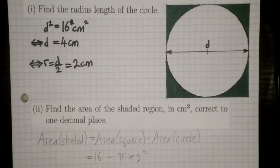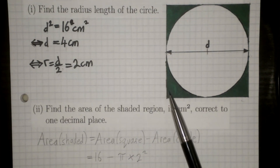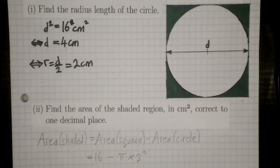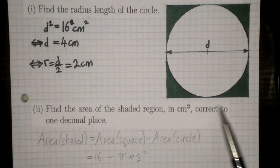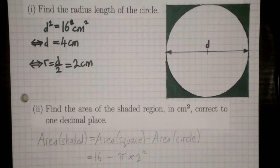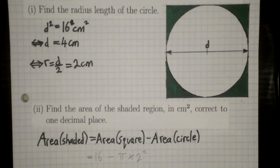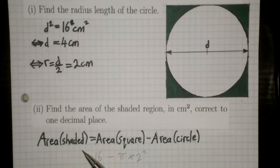In the next part of the question we have to find the area of the shaded region, which I've coloured here in green, to find the area in cm² correct to 1 decimal place. Think about what areas you can actually find with the dimensions we have. The formula that works is: the area of the shaded region equals the area of the square minus the area of the circle.